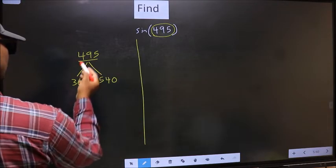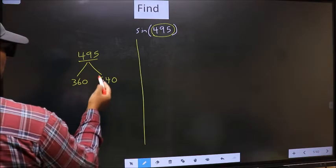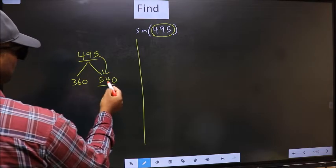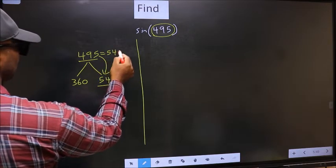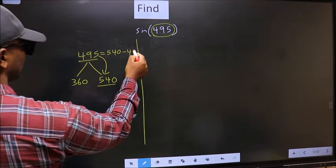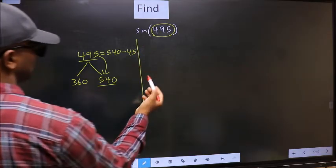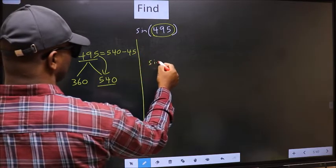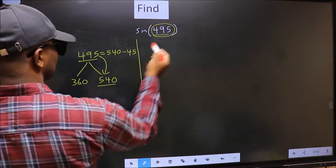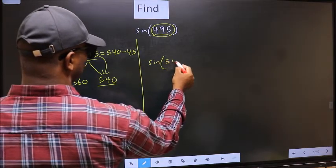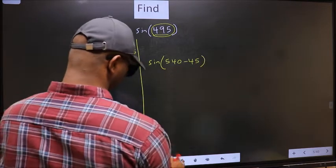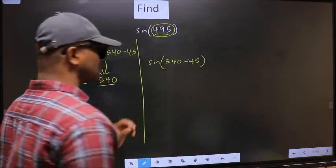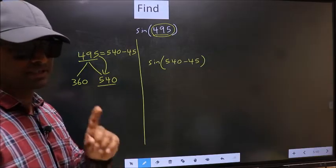Now, 495 is close to which number? This is close to 540. So 495 now should be written as 540 minus 45. So this will become sin. In place of this, we should write 540 minus 45. This is your step 1.